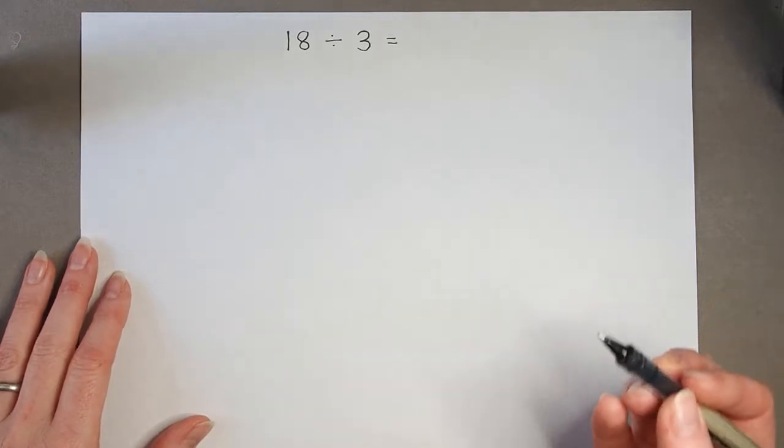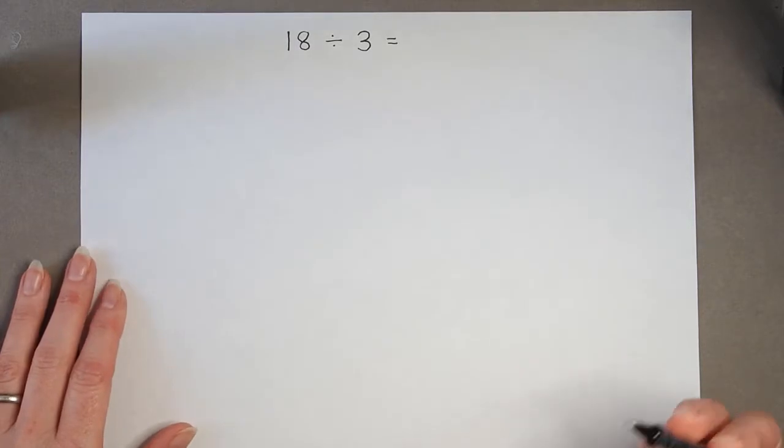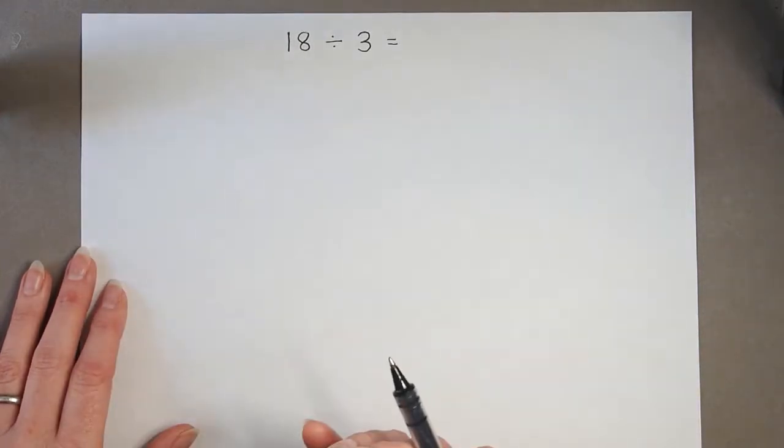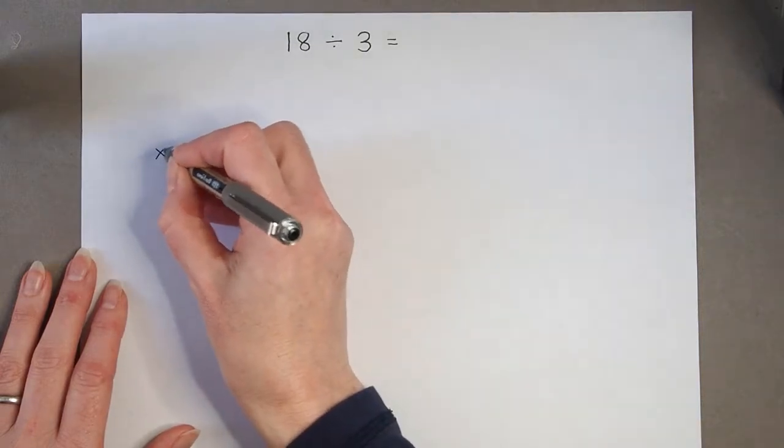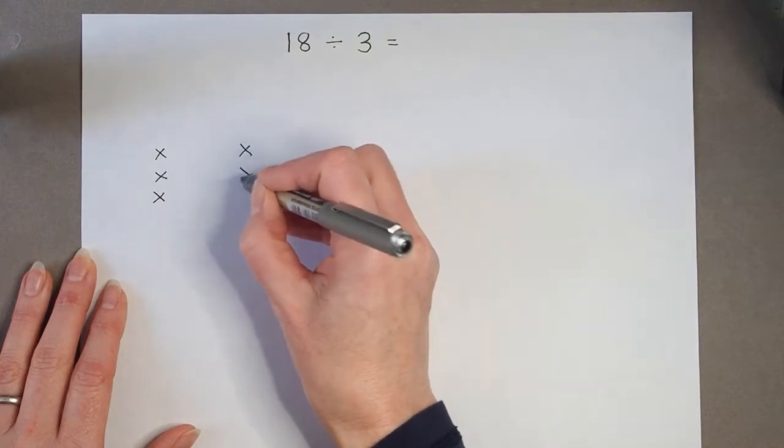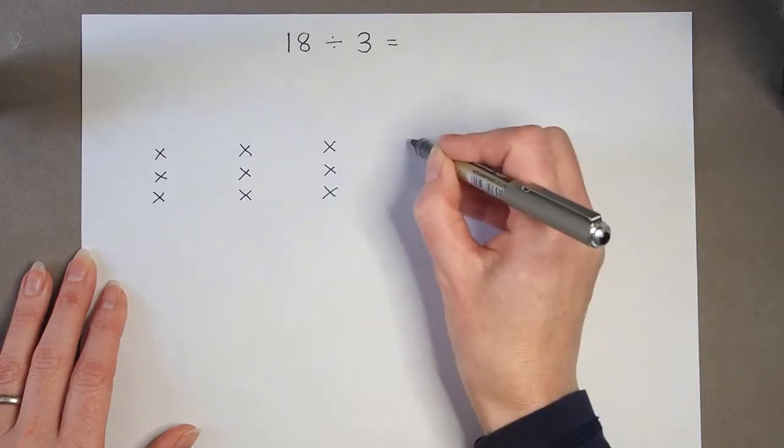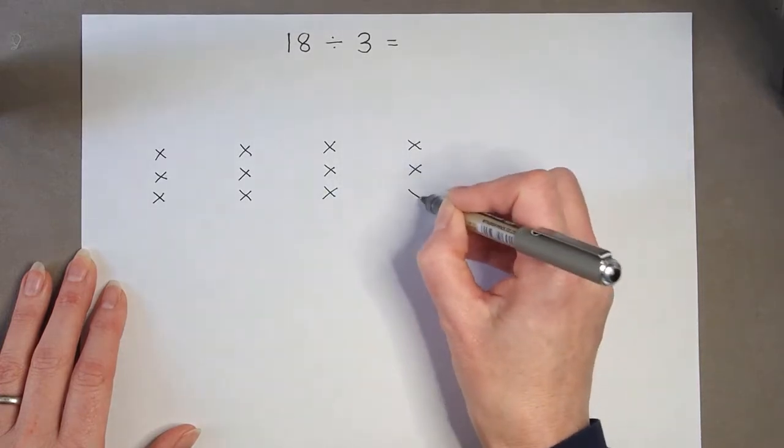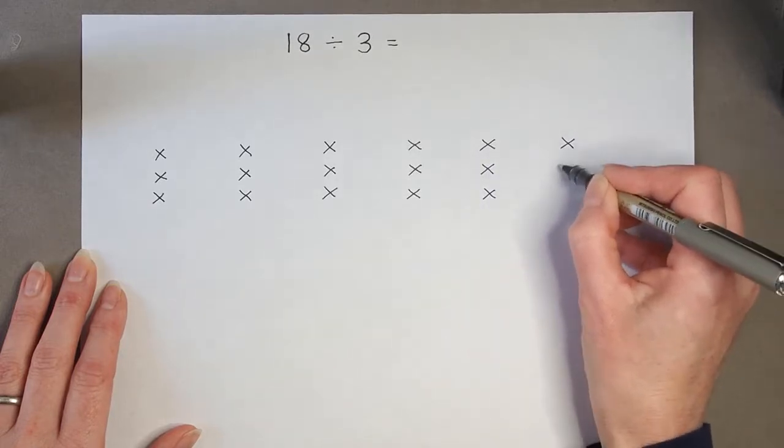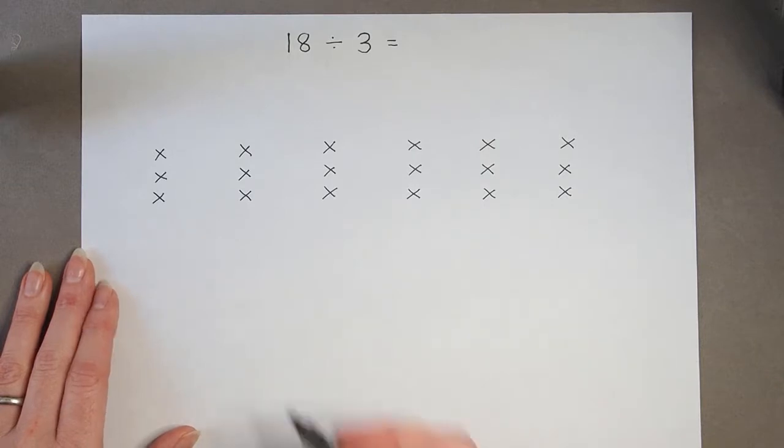So 18 divided by 3. I'm going to put them into 3's. So again, I need to count 18, but each time I'm going to just put 3 of them together to make a group. So 1, 2, 3, 4, 5, 6, 7, 8, 9, 10, 11, 12, 13, 14, 15, 16, 17, 18. So I can see the groups that I've made.